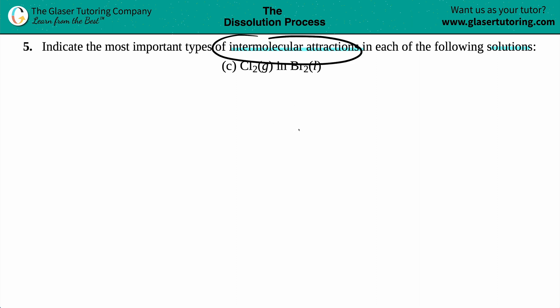In order to do this, the easiest way is to first identify if you have ionic compounds or covalent. Cl2 and Br2 are both non-metals, so we're dealing with covalent compounds.